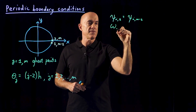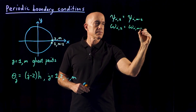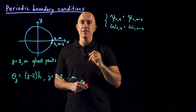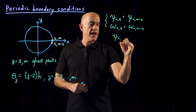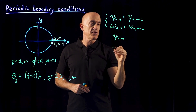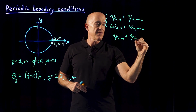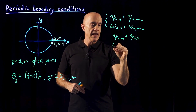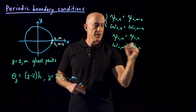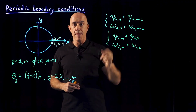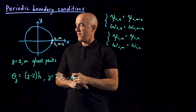The same periodic boundary condition is true for the vorticity. For the last value of theta: psi for all radial points at the last theta value equals psi at the second theta value — psi(i, 2) — and the same holds for the vorticity. So those are our boundary conditions for the first theta value and for the last theta value.